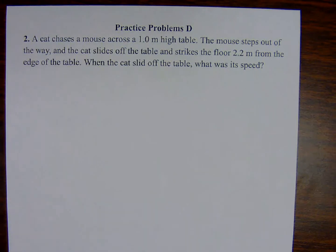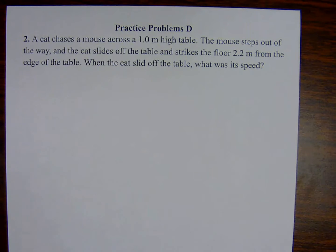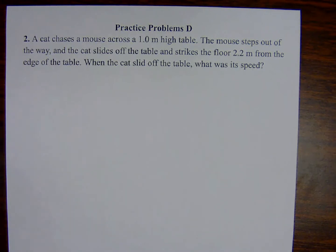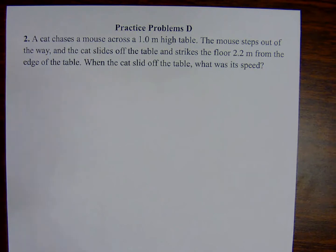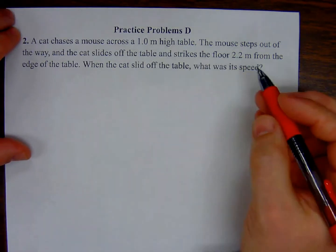Practice problem number two associated with simple problem D. A cat chases a mouse across a 1.0 meter high table. The mouse steps out of the way, and the cat slides off of the table and strikes the floor 2.2 meters from the edge of the table. When the cat slid off the table, what was its speed?